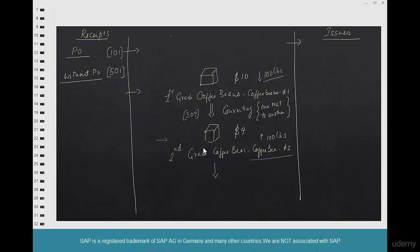When you do this conversion from first grade to second grade, how do you know it's time to convert? You have some metrics — you do some kind of QA quality analysis and determine it's no longer relevant for first grade. In order to do that, you pick up some material from the lot and do your quality analysis. I'll put this under issues as QA sampling, because this is something we're trying to remove from stock. The movement type for that is somewhere in the 300s.